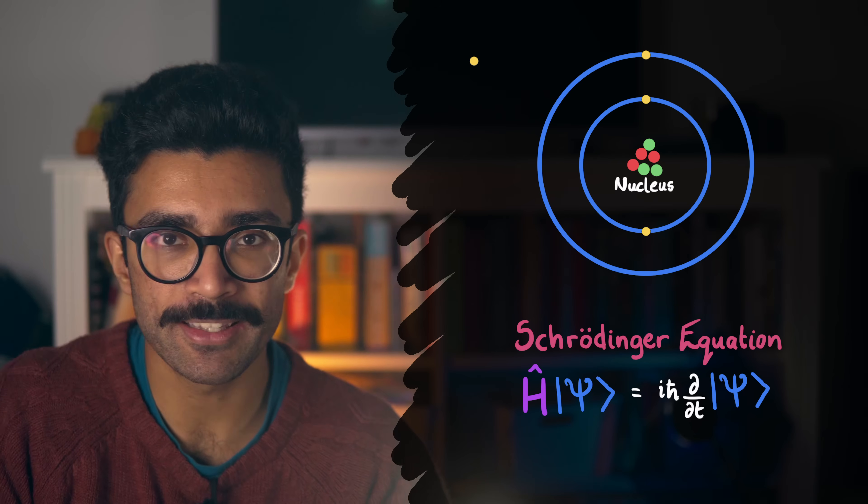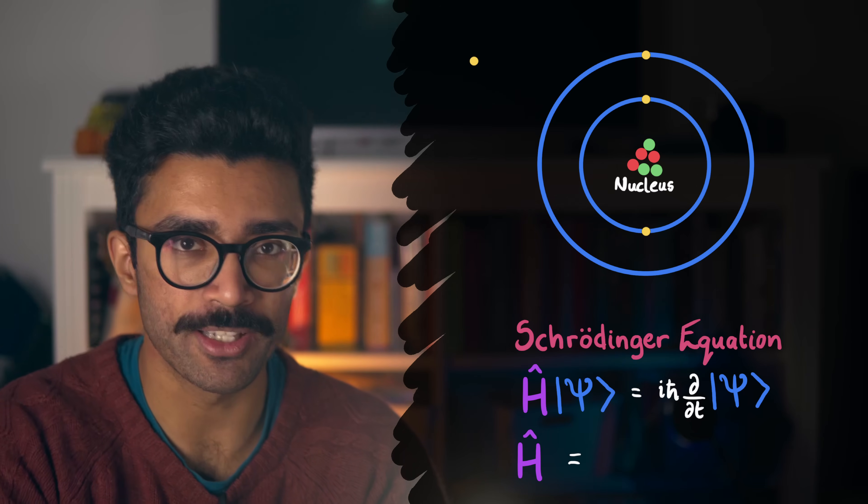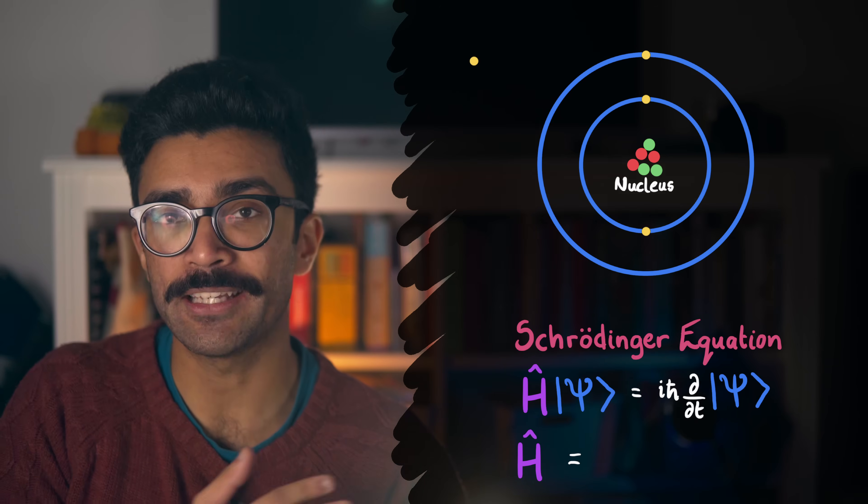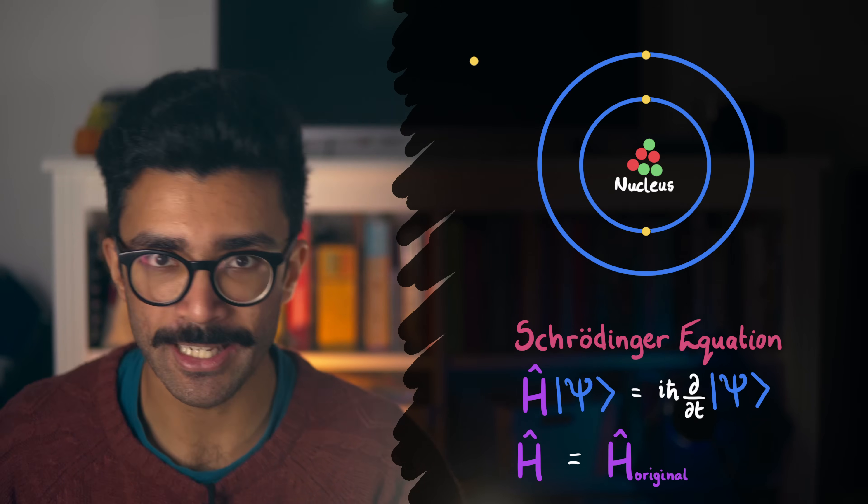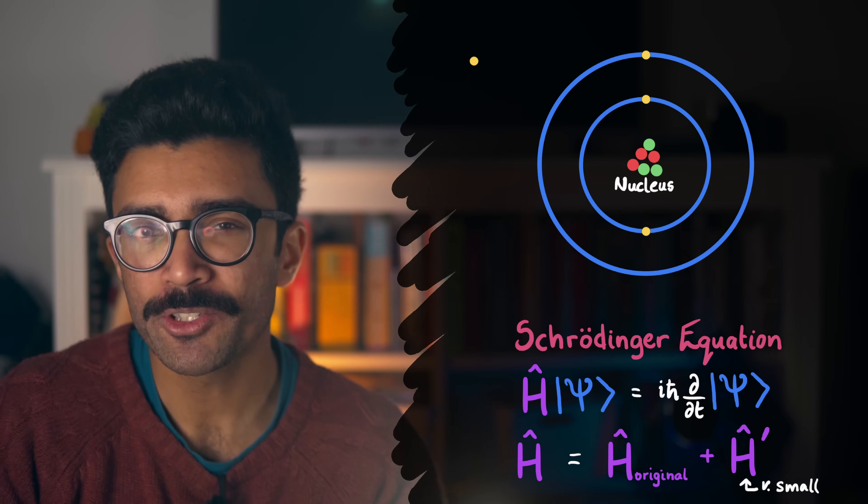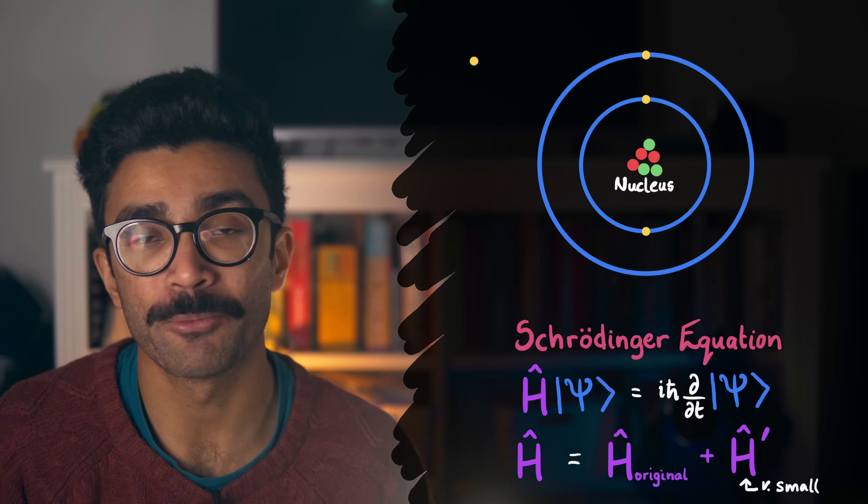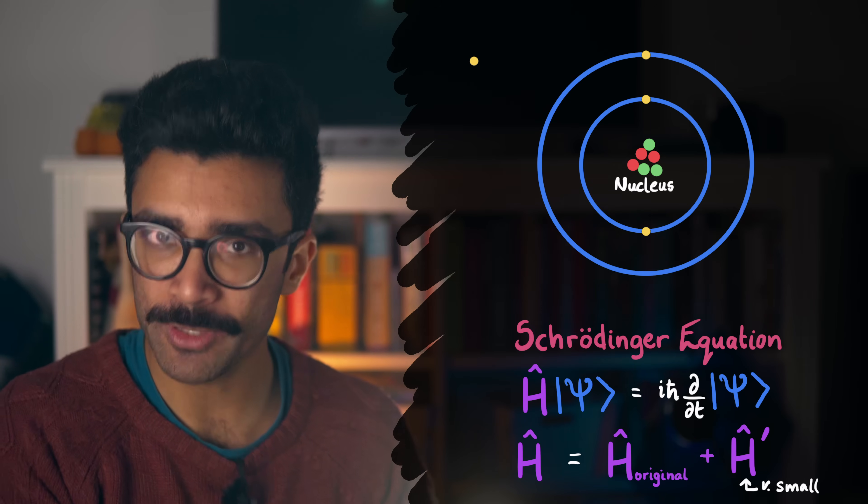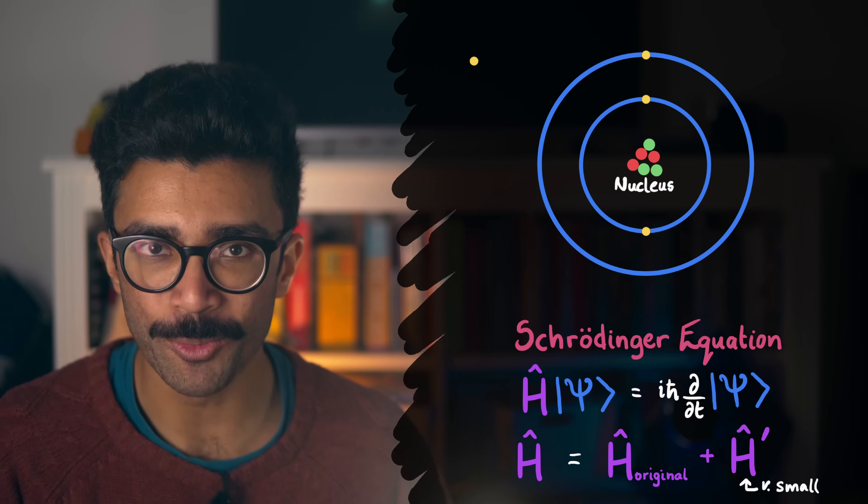In other words, then, we can say that the Hamiltonian of our new system, the one with the faraway electron, is equal to the Hamiltonian of the old system, the one without the electron, plus some small change, H prime. We have to do a few approximations in order for this new Hamiltonian to look like this, but we're studying, particularly, systems that can be described as the old Hamiltonian, plus a small new one.